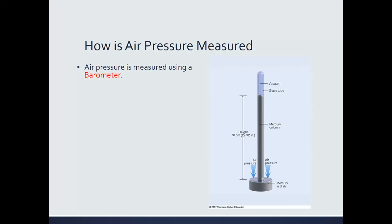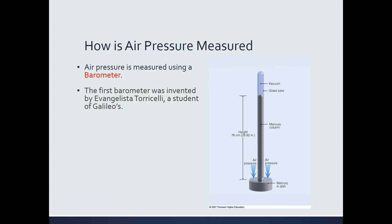The term 'inches of mercury' actually comes from how air pressure was originally measured. Air pressure is measured using an instrument called a barometer, and there are many different types. The original barometer was invented by Evangelista Torricelli, a student of Galileo Galilei — the man who perfected the telescope and saw Jupiter's first four moons. Torricelli created the first barometer, and the reason we use the term 'inches of mercury' is because his barometer used mercury.